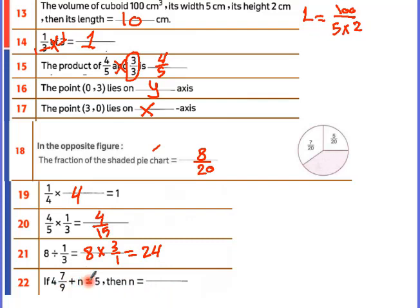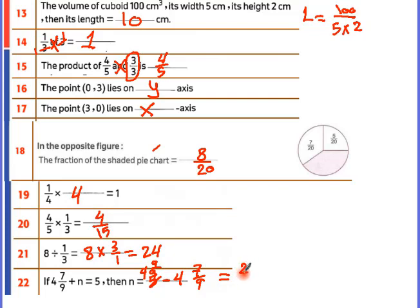Plus becomes minus. So 5 minus 4 and 7 over 9: the 5 becomes 4 and 9 over 9. Then 9 over 9 minus 7 over 9 equals 2 over 9. The whole number 4 minus 4 equals 0. So the answer is 2 over 9.